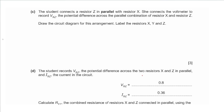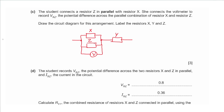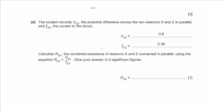Part c: the student connects resistor Z in parallel with resistor X. We draw a circuit diagram with two rectangles (X and Z) in parallel, connected in series with resistor Y, the ammeter, switch, and power supply. The voltmeter is connected in parallel across the X-Z combination. We label the resistors X, Y, and Z.